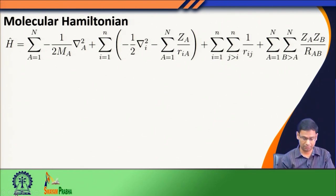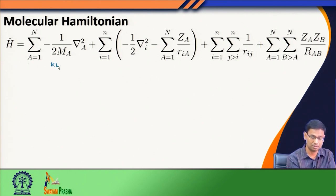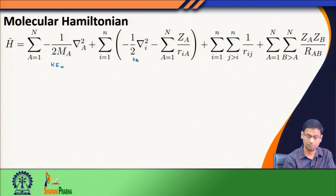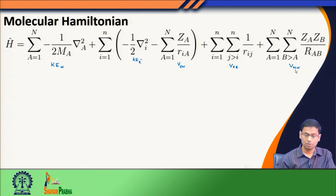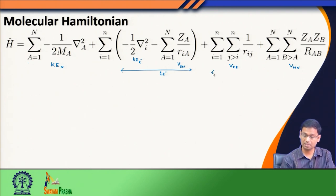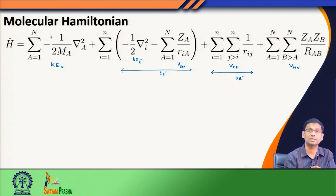Now we come back to the Hamiltonian that we have. You see the terms here: the first term is the kinetic energy of the nucleus, then the kinetic energy of electrons, then the potential energy between electron and nucleus, then the electron-electron repulsion potential energy, and finally the nuclear-nuclear repulsion. The kinetic energy of the nucleus and the nuclear-nuclear repulsion are independent of electrons, while the electron-nucleus attraction and electron-electron repulsion are one-electron and two-electron operators respectively.